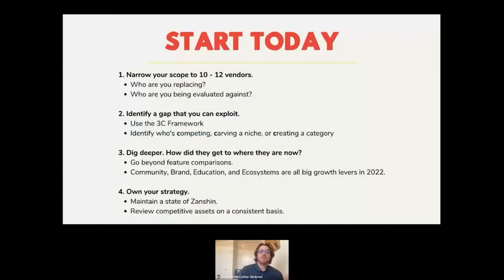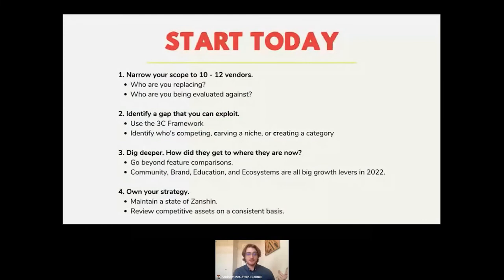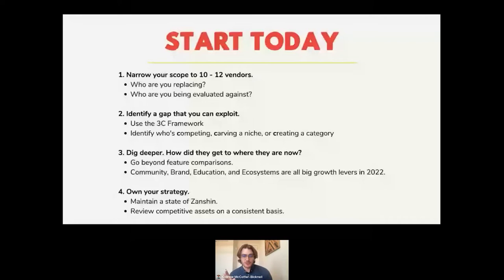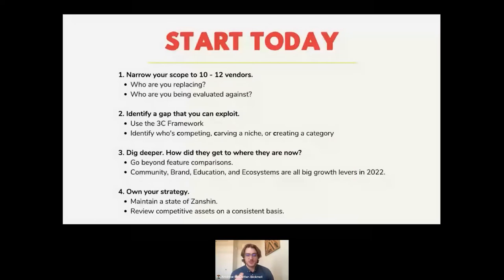Here's how you should start your competitive intelligence program in a saturated market. First, narrow your scope to about 10 vendors — ask yourself who you're replacing and who you're being evaluated against. Next, identify a gap among those competitors — that's your opportunity to differentiate. Use the 3C framework to bucket who's competing, carving a niche, or creating a category. Third, go deeper with each company's strategies beyond feature comparisons — understand their growth levers: community, brand, education, ecosystem. Last but not least, pick a direction and execute. Maintain your awareness — keep a close eye on the market, update your landscape assessments, battle cards, and win-loss programs accordingly.